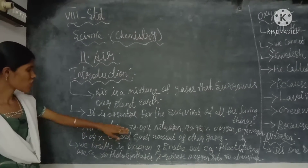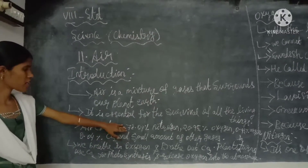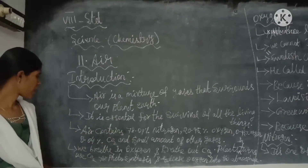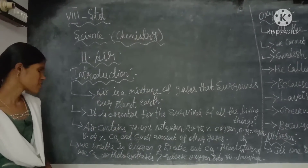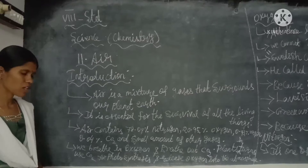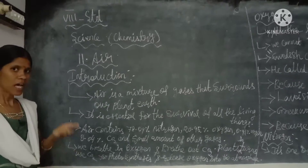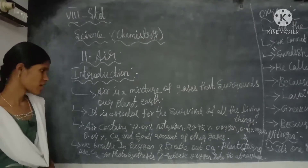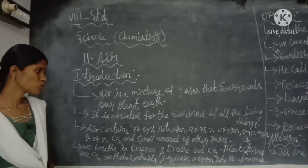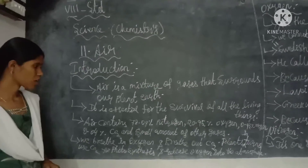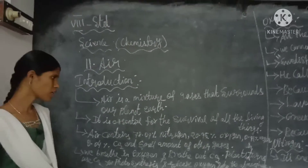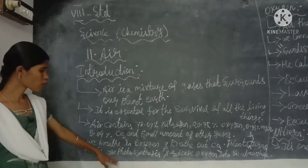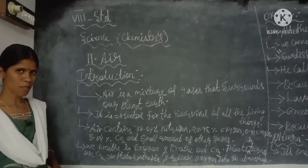Among these components, nitrogen has the highest percentage in air. We breathe in oxygen and breathe out carbon dioxide — we inhale oxygen and exhale carbon dioxide. But plants do the opposite: they use carbon dioxide for photosynthesis.